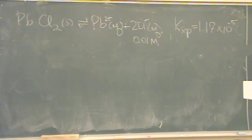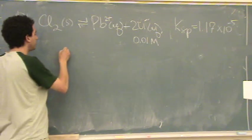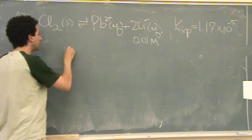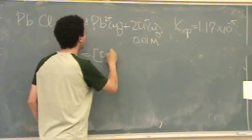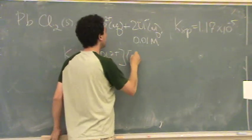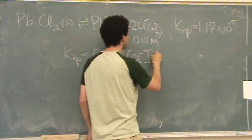And then it says how much lead do you need to cause this to precipitate? Basically. Okay, so what I would do is go, well, KSP is lead 2 plus times Cl minus squared.